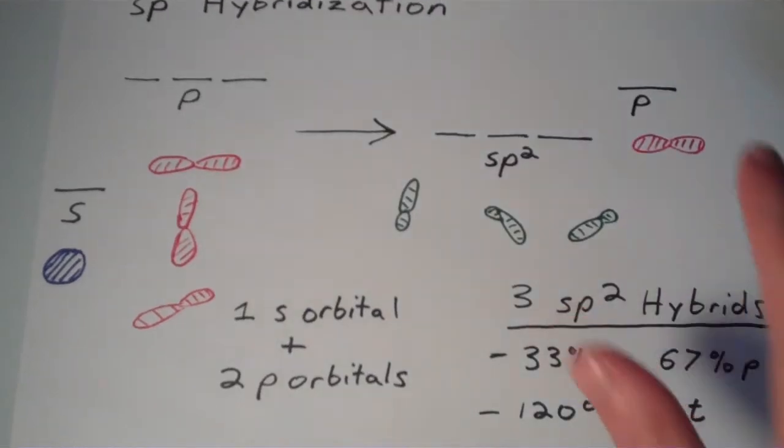But then again, you also have this unhybridized p orbital. So in this picture, they're shown apart from one another, but how does that look when we look at all the orbitals together?